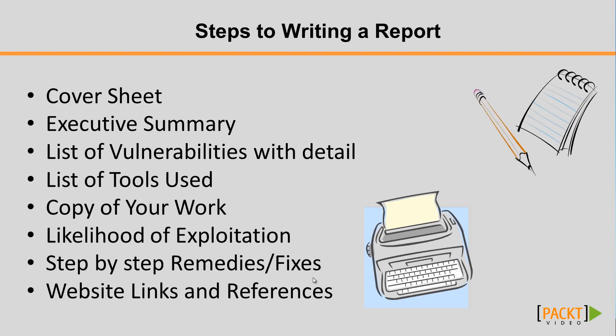Steps to writing a report: you want to have a cover letter — that's the first thing you want to have — and then an executive summary, and then a list of vulnerabilities with detail. When you're listing your vulnerabilities, you want to make sure you have the vulnerability name or the code number associated with it, along with a brief description of what that vulnerability is.